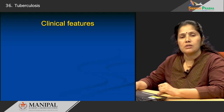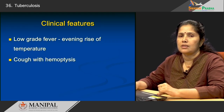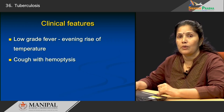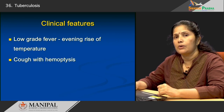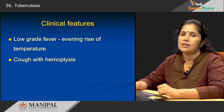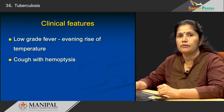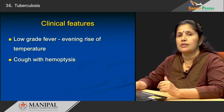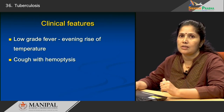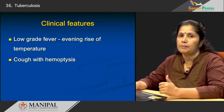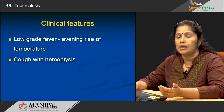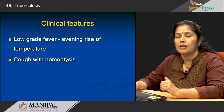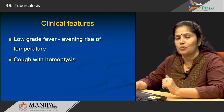Looking at the clinical features, most patients will present with low-grade fever — not a very high fever as in viral fever, but a very low-grade fever. Specifically, these patients will complain about an evening rise of temperature. Along with that, patients will present with cough with hemoptysis, meaning the patient brings out blood in their sputum. This is a very important sign for tuberculosis.